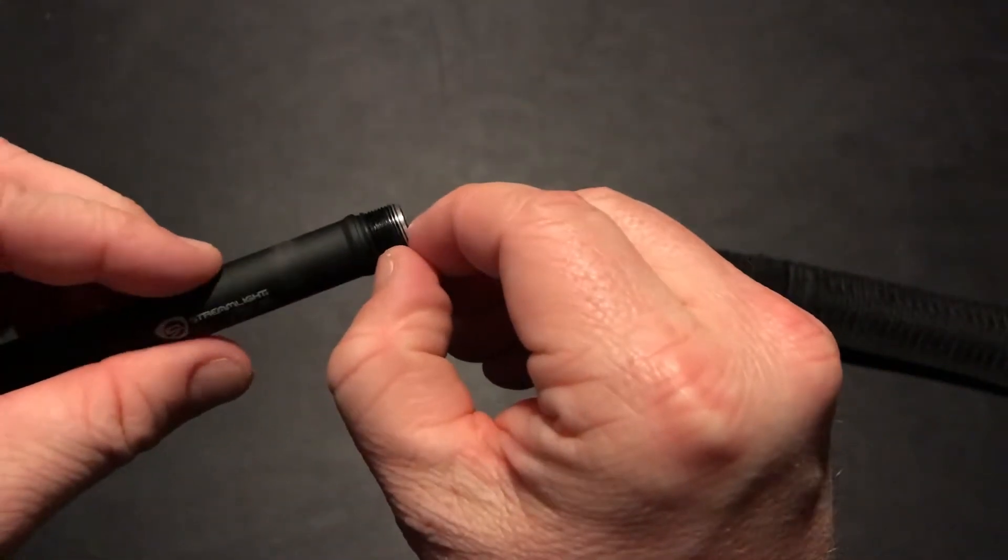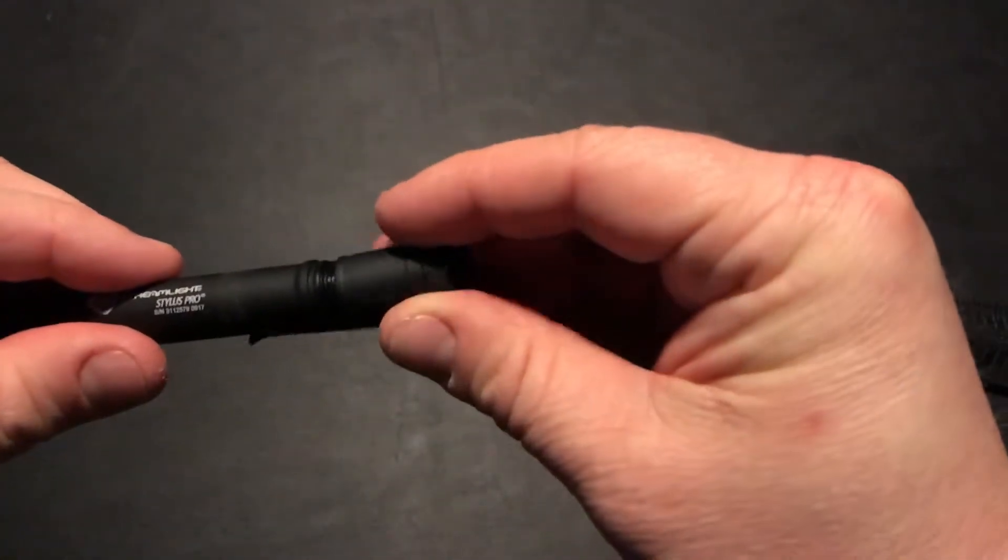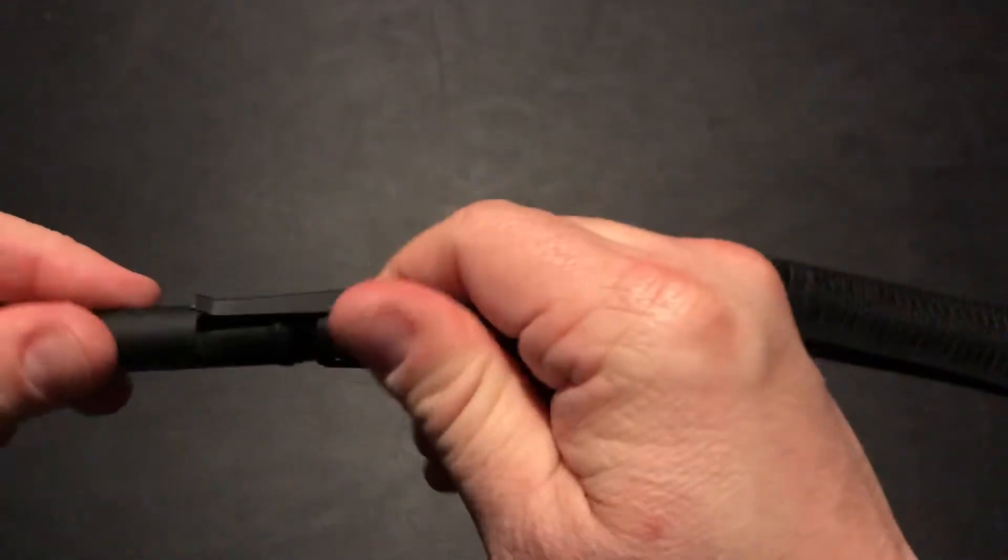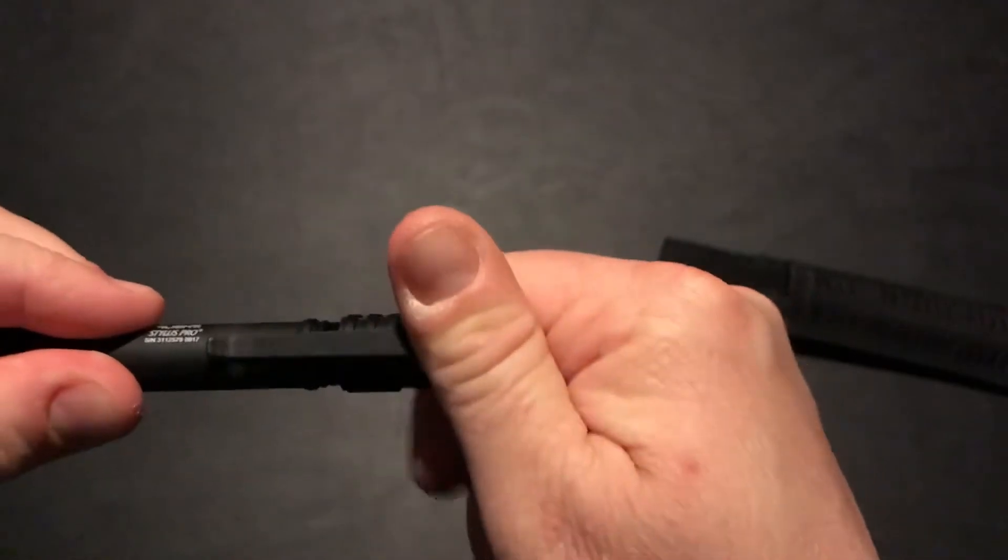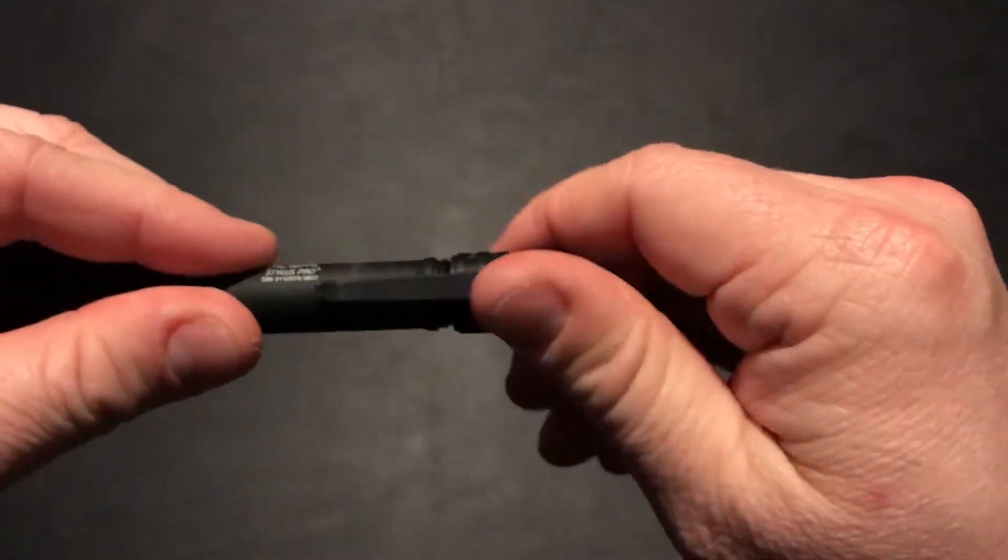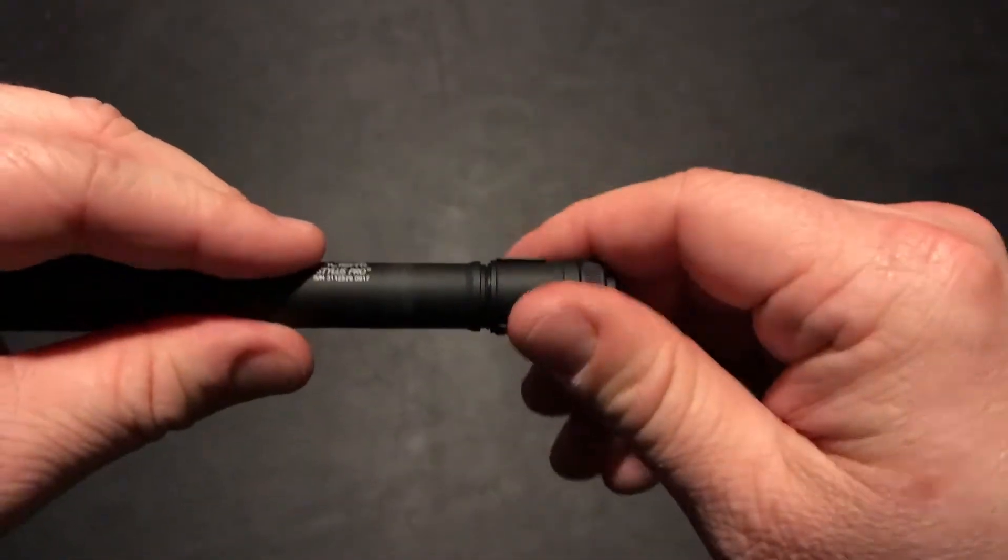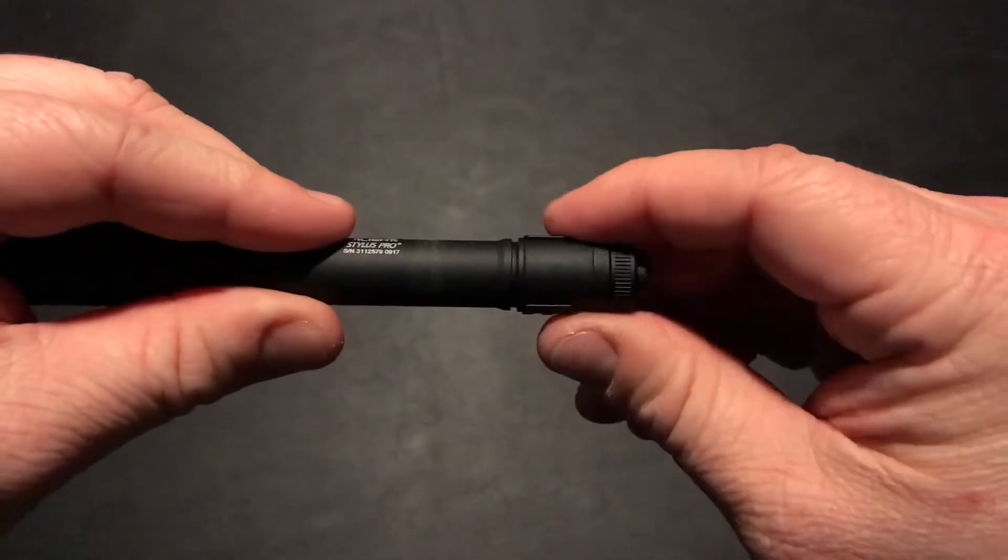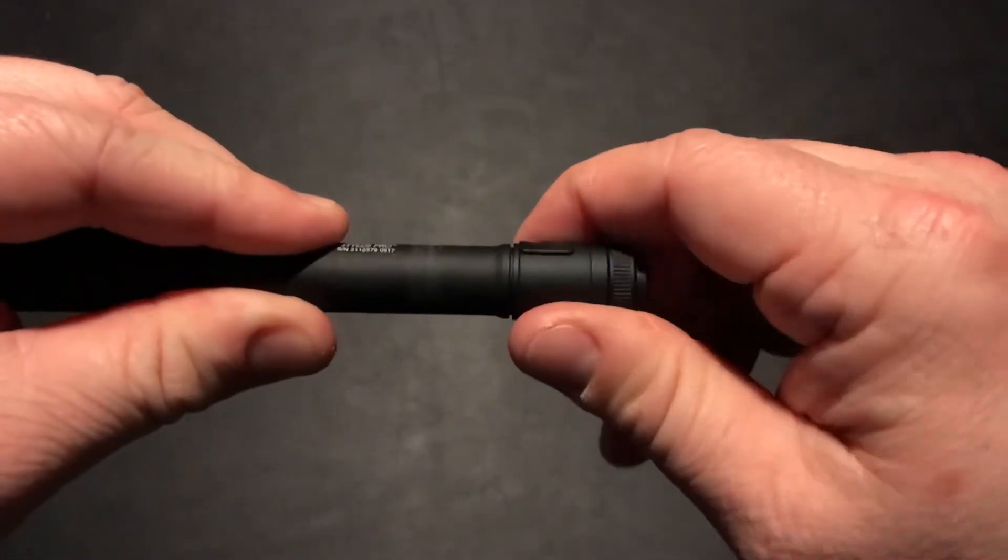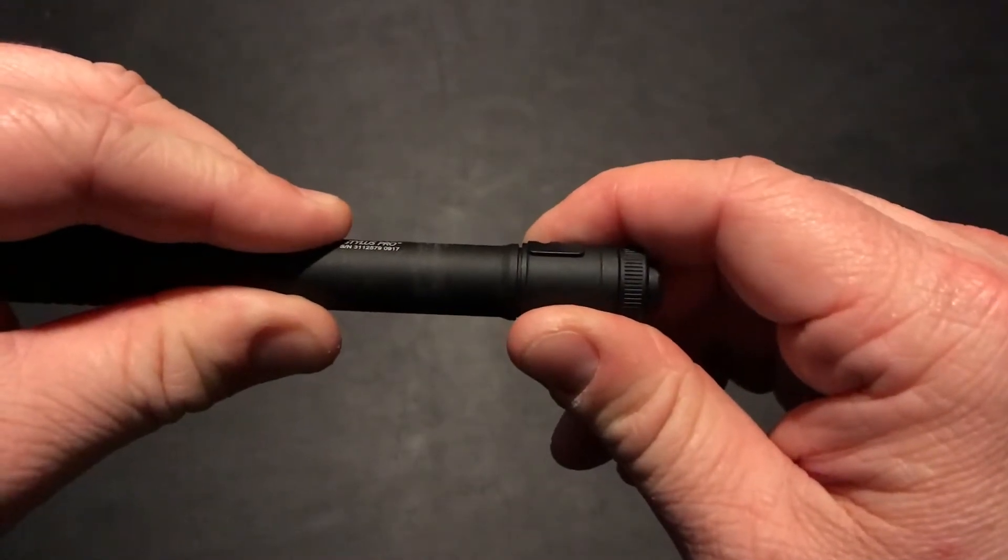There's a rubber seal here. You want to make sure that this tail switch is screwed all the way down. When you get to a certain point it's going to start feeling firm and you want to keep going until it doesn't want to go anymore.